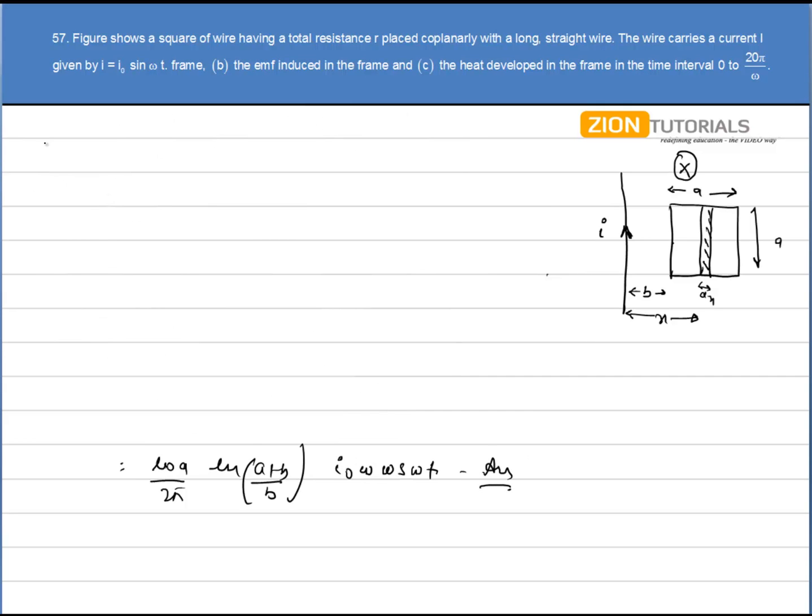Now in the second part we have to calculate the heat developed. So first of all I assume that dh that is a small heat that is produced in a small time interval that is i square r dt. Where r is the resistance of the loop and i is the current through the loop. So I can write it as i square r dt integrated from 0 to 20 pi by omega.